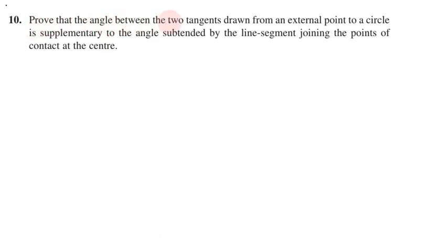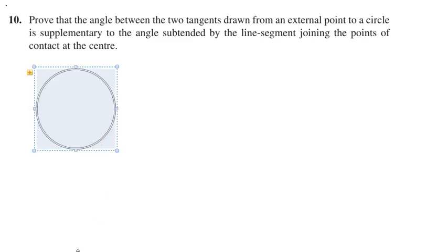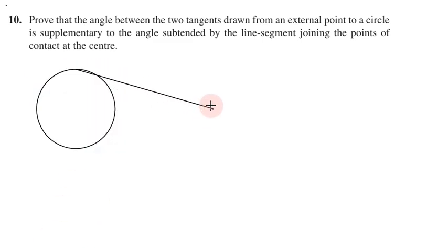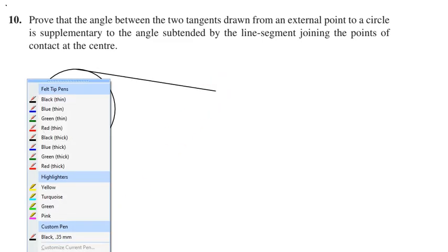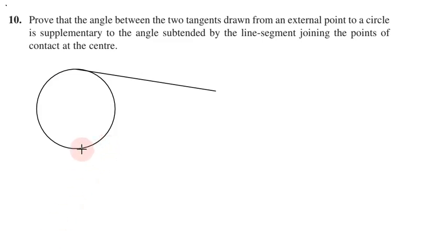To prove this, there is a circle and an external point. Two tangents are drawn from that external point. We need to prove that the angle between the two tangents is supplementary to the angle subtended at the center.